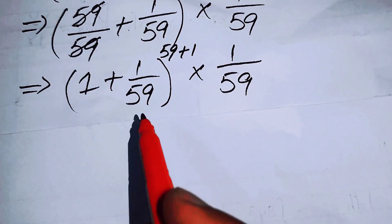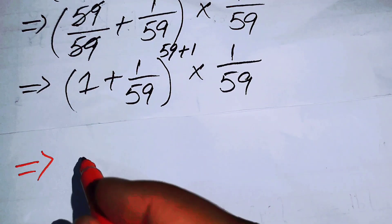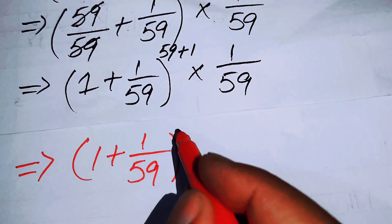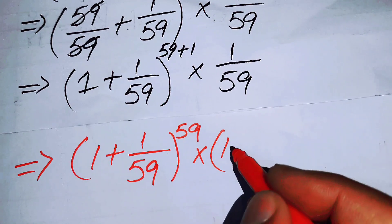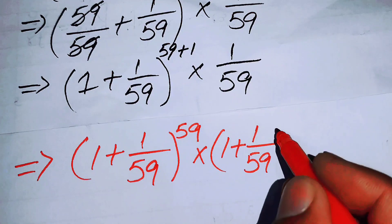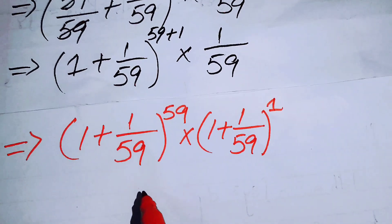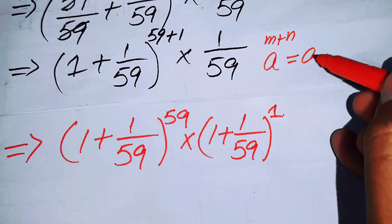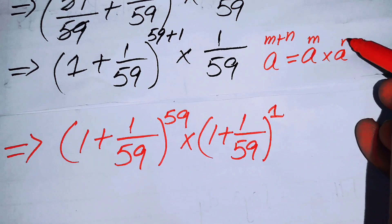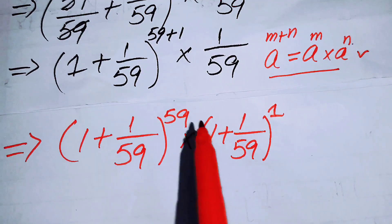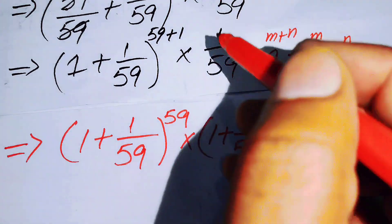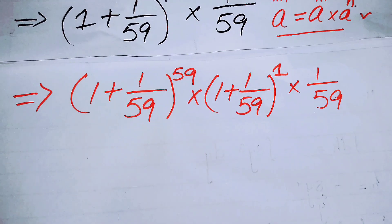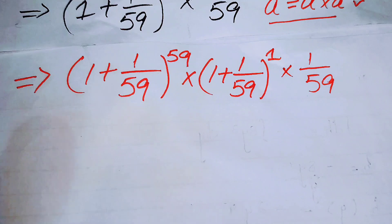I can break the exponent using the exponential law again: (1 + 1/59)^(59+1) = (1 + 1/59)^59 × (1 + 1/59)^1. So the full expression becomes (1 + 1/59)^59 × (1 + 1/59) × (1/59).